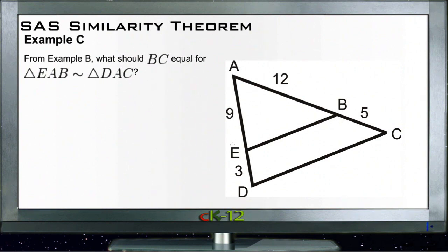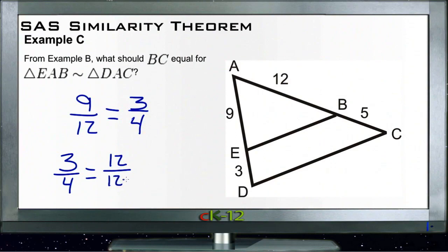Well, we knew that this one over here was a ratio of 9 to 12, so that means that the other one needs to be a similar ratio of what reduces to 3 to 4. So we know that 3 over 4 should be equal to 12 over 12 plus something, right?